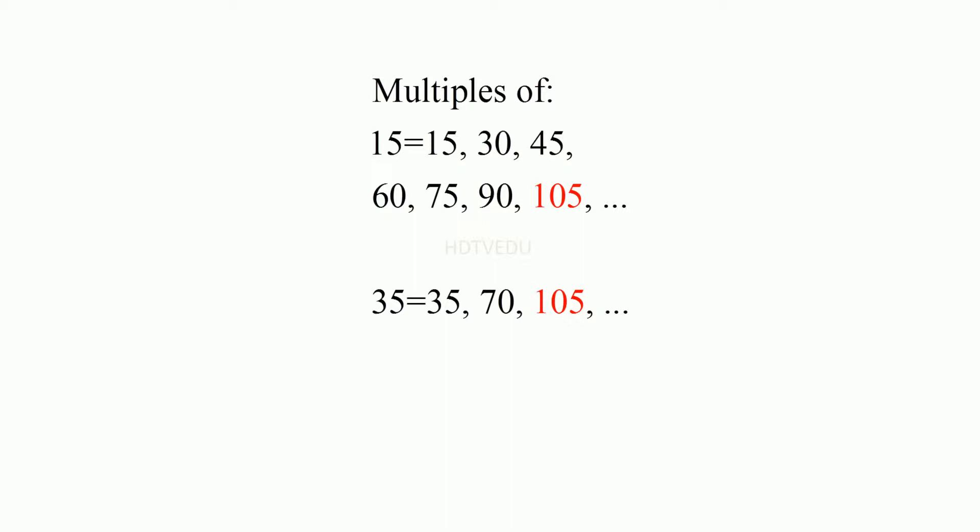What are the multiples of 15? 1 times 15 is 15. 2 times 15, 30. 3 times 15, 45. 4 times 15, 60. 5 times 15, 75. 6 times 15, 90. 7 times 15, 105. How about multiples of 35?